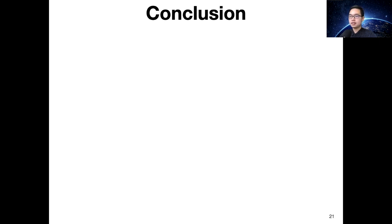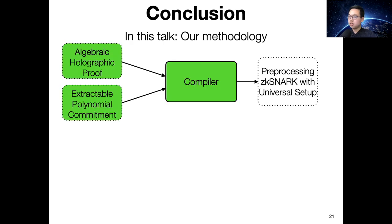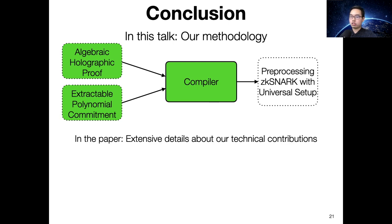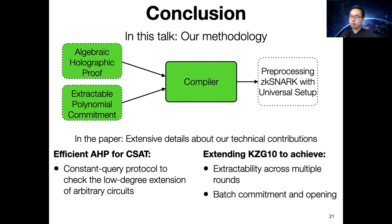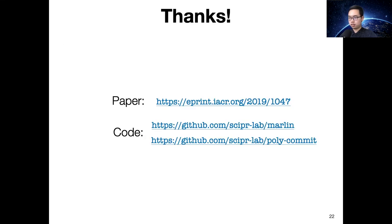In conclusion, in this talk we have seen how to construct a universal preprocessing ZK-SNARK from an algebraic holographic proof and extractable polynomial commitment. In the paper, you can find more details about those components, such as our efficient AHP for R1CS using low-degree extension for arbitrary circuits, and the extended KZG10 polynomial commitment achieving the additional properties required by our compiler. Thanks for listening — here are the links to our paper and implementation; feel free to take a look for more details.